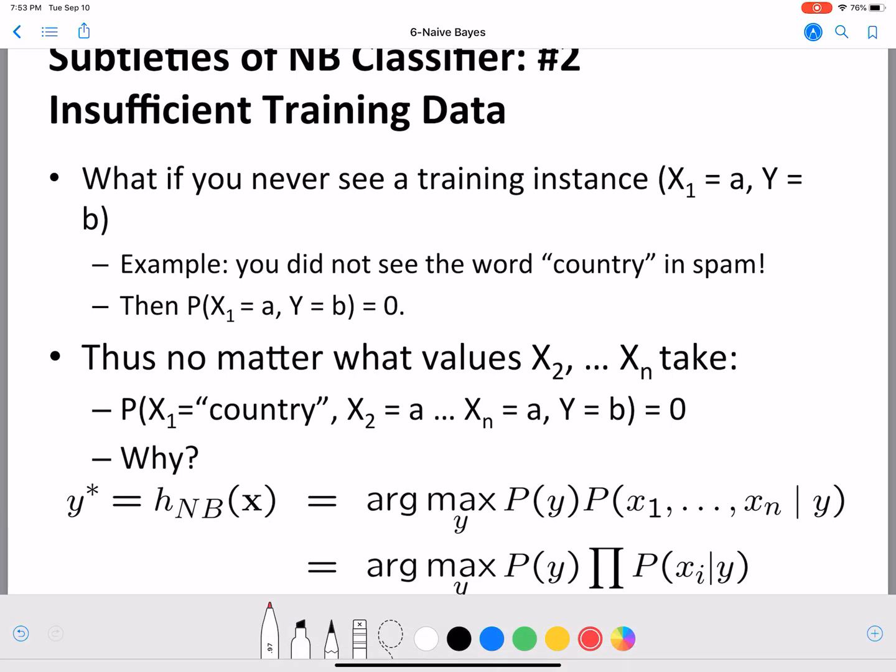Another Naive Bayes problem that you will often notice is that there aren't enough training instances to calculate all the different probabilities. For example, you have never seen a training instance with X1 equals a and Y equals b, or some combination you have not seen in the training data, but at test time that is the instance you are required to compute the prediction class for. Let's say you did not see the word 'country' in spam. If the word 'country' never occurred in spam, then P(X1 = country, Y = spam) will be equal to zero.